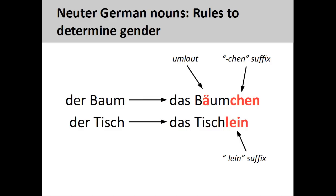For example, Baum, meaning tree, becomes Bäumchen, meaning little tree, and Tisch, meaning table, becomes Tischlein, meaning little table. There are also numerous dialect variations of the diminutive suffix.